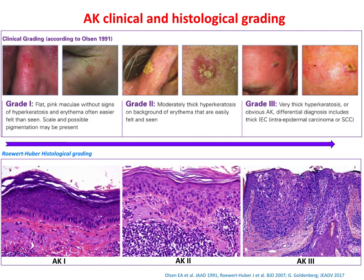The clinical classification system of Olsen grades AK lesions according to their overall thickness, with grade 1 including slightly palpable AK lesions, grade 2 moderately thick AK lesions, and grade 3 very thick hyperkeratotic lesions.